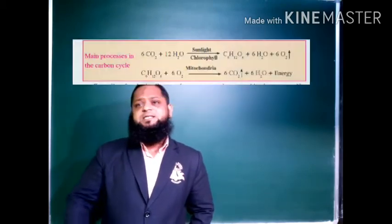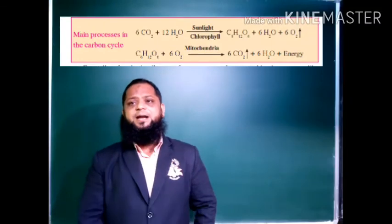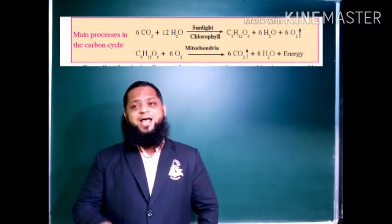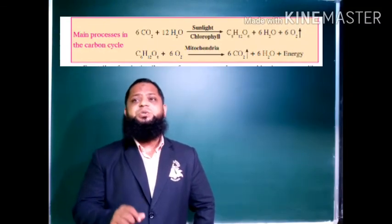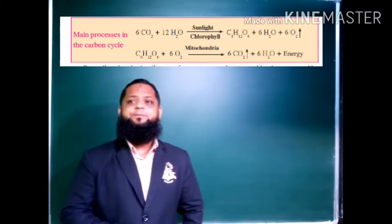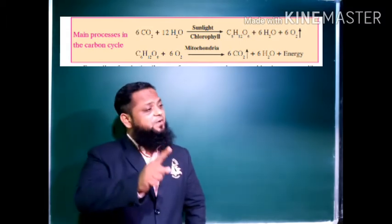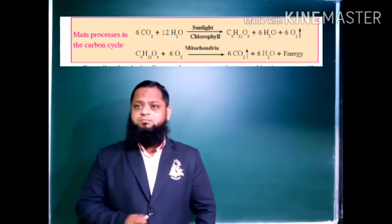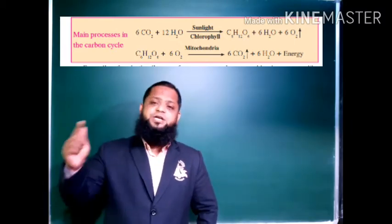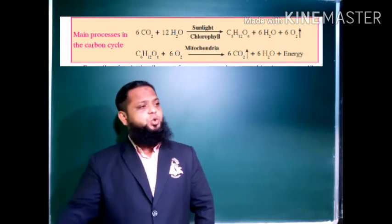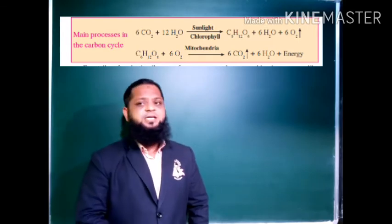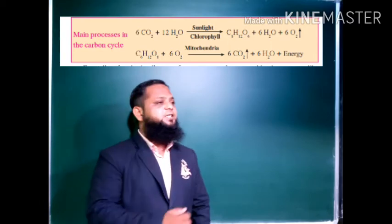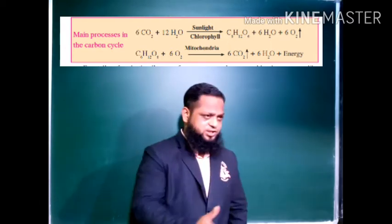6 molecules of carbon dioxide combine with 12 molecules of water in the presence of sunlight and chlorophyll. It gets converted into glucose, 6 molecules of water, and 6 molecules of oxygen.